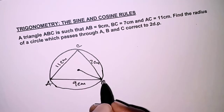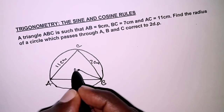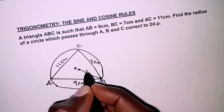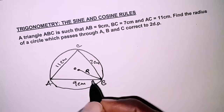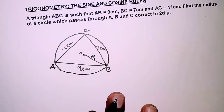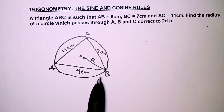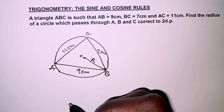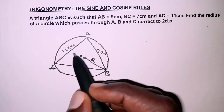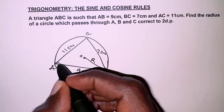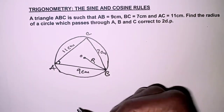From B to the center — let's call the center O — that is radius R. In order to determine the radius R, we will begin by applying the cosine rule to get any of the angles. So I'll consider angle A.